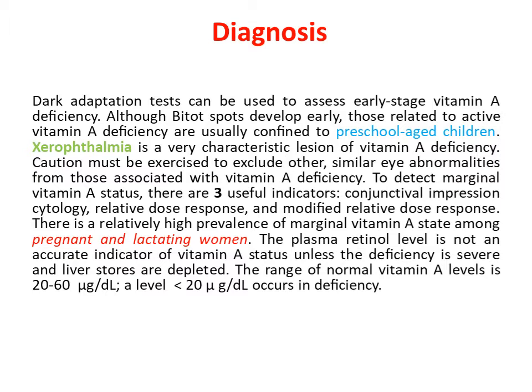To detect marginal vitamin A status, there are three useful indicators: conjunctival impression cytology, relative dose response, and modified relative dose response. There is a relatively high prevalence of marginal vitamin A status among pregnant and lactating women. The plasma retinol level is not an accurate indicator of vitamin A status unless the deficiency is severe and liver stores are depleted. The range of normal vitamin A levels is 20 to 60 microgram per dL. A level less than 20 microgram per dL occurs in deficiency.